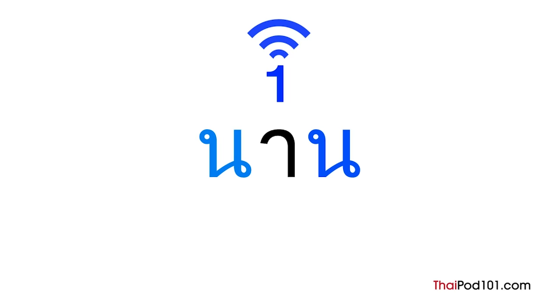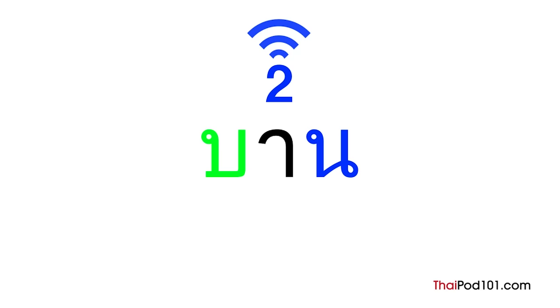Congratulations! You now know all of the final consonant sounds in Thai. All of the remaining consonants share one of the final sounds you've already learned, so no more new complicated final sounds. Do you remember the first tone rule? It was: low-class initial consonant plus live ending equals mid-tone. The next tone rule is very similar: middle-class initial consonant plus live ending equals mid-tone.